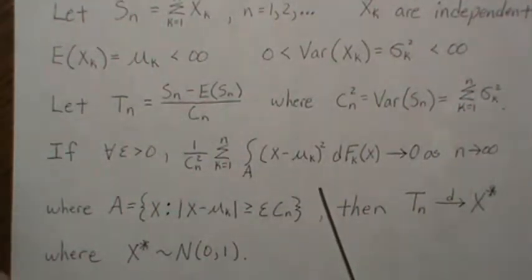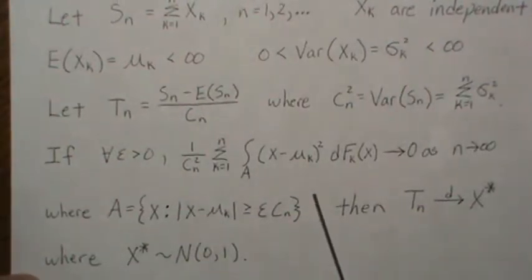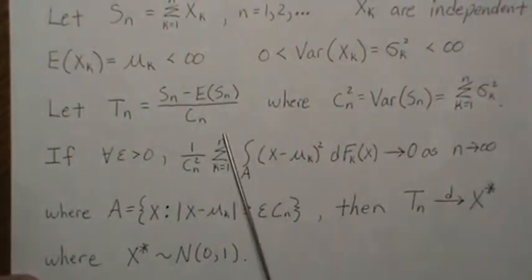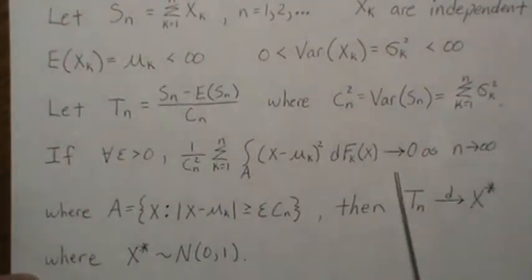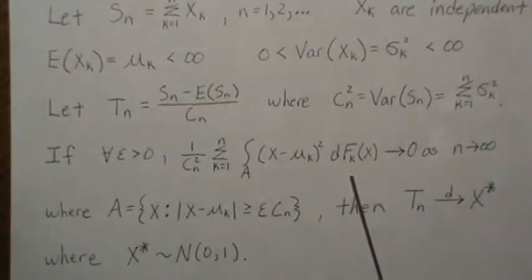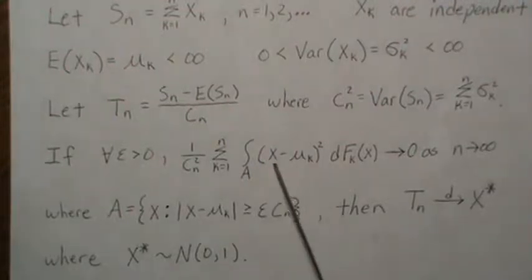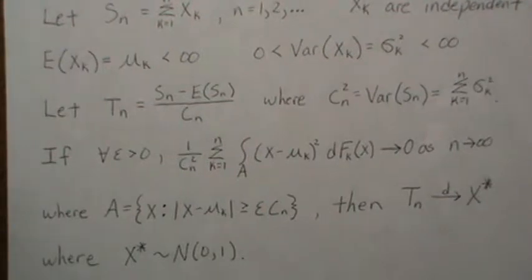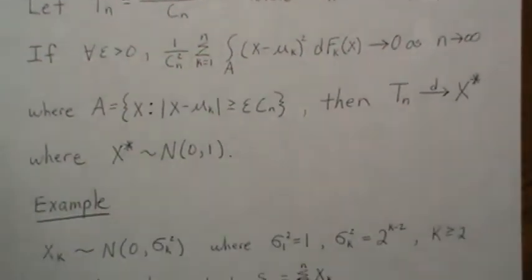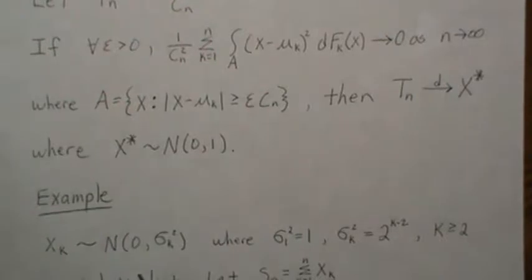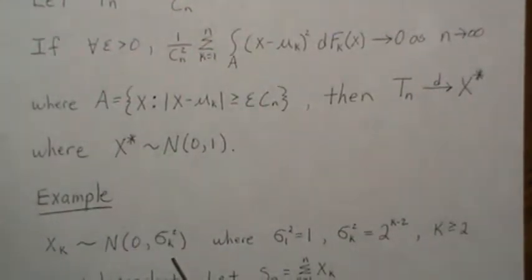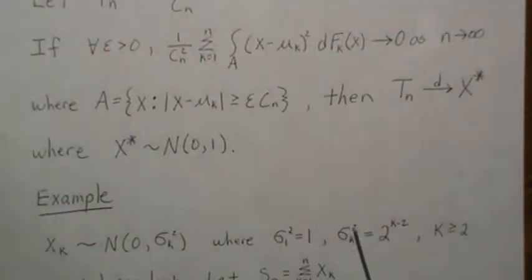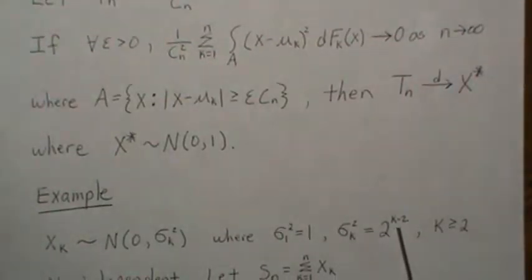I'm starting with this example because I really want to show what the condition means, and we'll have a follow-up video with even more detail. In this example, we're going to let Xk be Normal with mean zero and variance σk², where σ1² = 1.